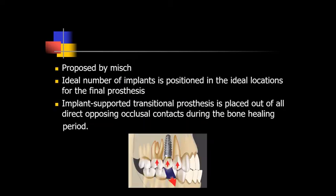The NFIT concept was proposed by Misch. The two major differences from the immediate loading technique for completely edentulous patients are: first, rather than submerging more than half the implants or placing extra implants, here the ideal number of implants are positioned in the ideal location for the final prosthesis. Second, the implant-supported transitional prosthesis is placed out of all direct opposing occlusal contacts during the bone healing period. An aesthetic tooth replacement is fabricated immediately but with no occlusal contact, and the dentist may also develop soft tissue contours with the transitional prosthesis during healing.